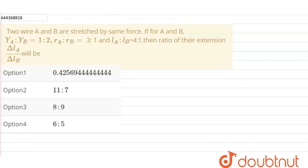Hello everyone, so our question is two wires A and B are stretched by the same force. If for A and B the ratio of Young's modulus YA upon YB is 1 is to 2, and the ratio of the radius for material A and B is 3 is to 1, and the ratio of their length is 4 is to 1, then the ratio of their extension delta L of A to B will be what?